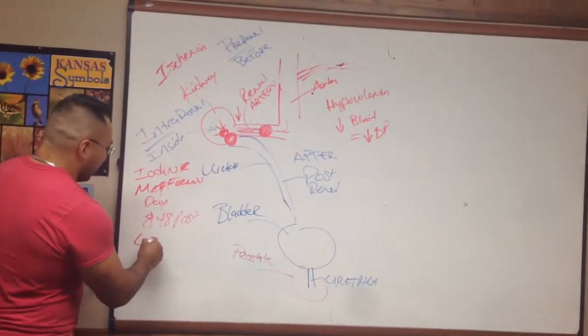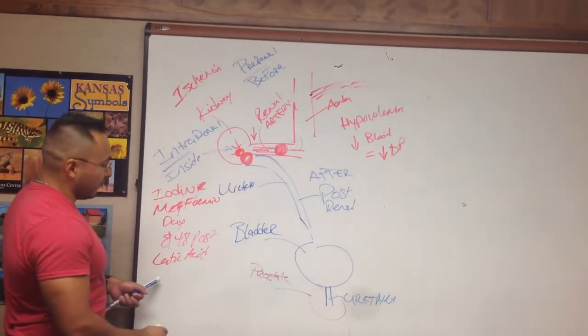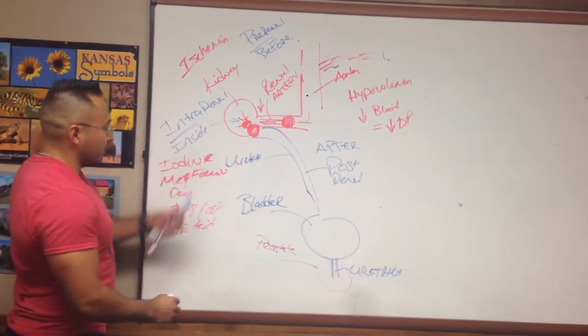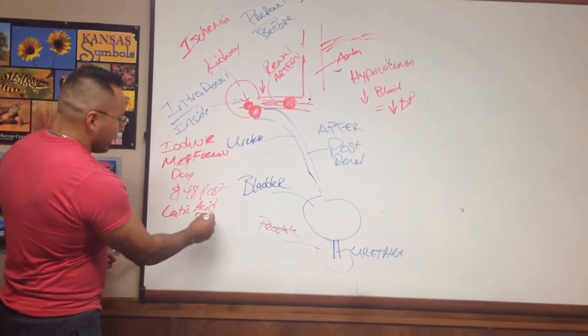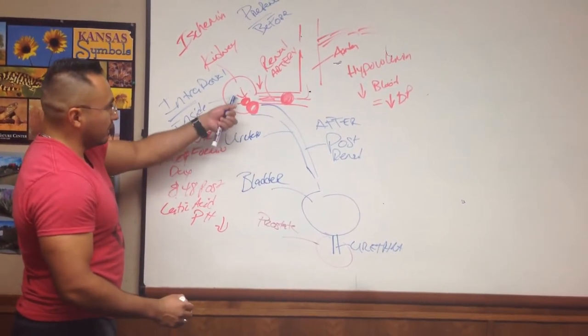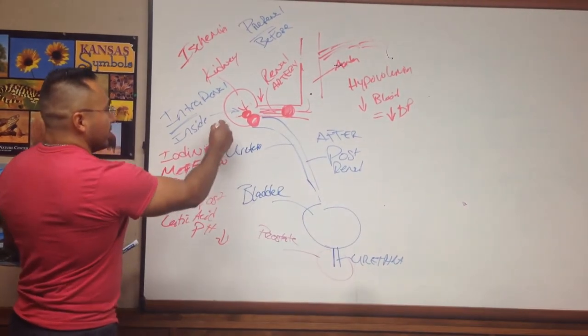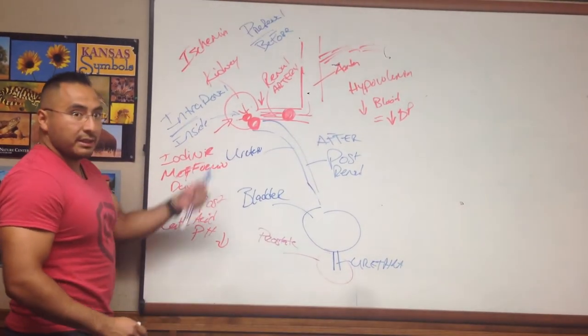Okay, now remember this has to do with lactic acid production. So if you have an accumulation of lactic acid, then it's also going to affect your pH. And your pH will decrease, causing the urine to be more acidotic, which would cause intrarenal failure that's inside the kidney.